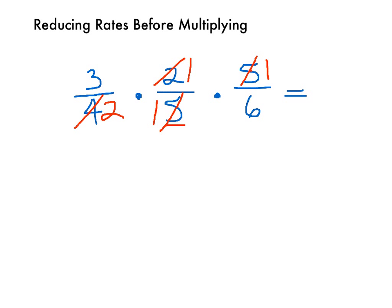And then we have the 3 and the 6 left. The greatest common factor of 3 and 6 is 3. So we can divide 3 divided by 3 is 1. 6 divided by 3 is 2.